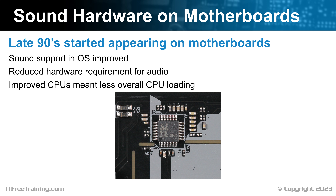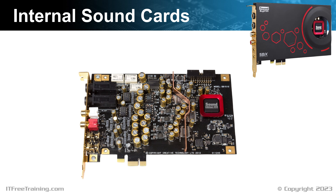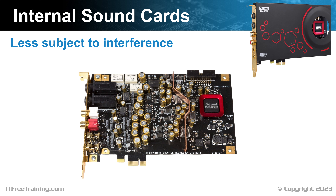An internal sound card is subject to less interference than an integrated sound chip. However, remember that integrated sound chips have come a long way and interference is not as big a problem as it once was. This particular internal sound card has EMI shielding around the card itself. The EMI shielding helps protect the sound card from electrical interference inside the computer. There is also additional EMI copper shielding inside the card. This copper runs from one end of the card to the other and creates a divide between the digital and analog parts of the card. This helps prevent interference by the card itself affecting the output.